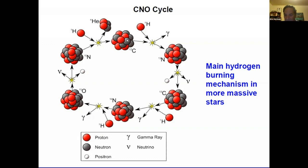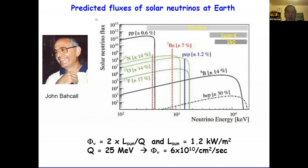The CNO cycle is important in stars more massive than our Sun, but also occurs in the Sun itself. How do you know any of this is true? You can't look into the center of the Sun to see these reactions directly. But you can detect the neutrinos produced along the way. John Bahcall spent most of his career calculating the flux of neutrinos at the surface of the Earth as a function of energy, showing the PP neutrinos, those from the CNO cycle, and the high-energy boron-8 neutrinos.